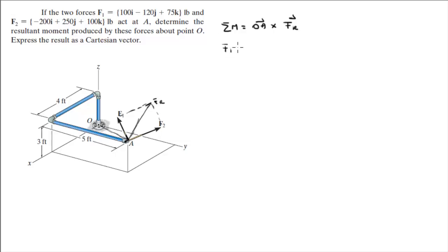F1 is 100i minus 120j plus 75k. F2 is equal to negative 200i plus 250j plus 100k. FR is simply given by the addition: negative 100i plus 130j plus 175k.